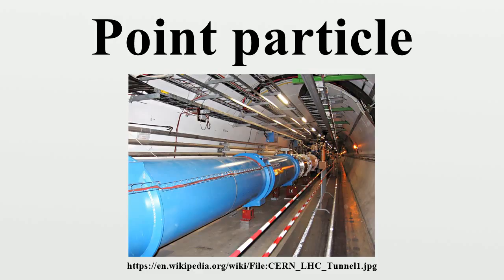The size of an elementary particle, in this sense, is exactly zero. For example, for the electron, experimental evidence shows that the size of an electron is less than 10⁻¹⁸ meters. This is consistent with the expected value of exactly zero.